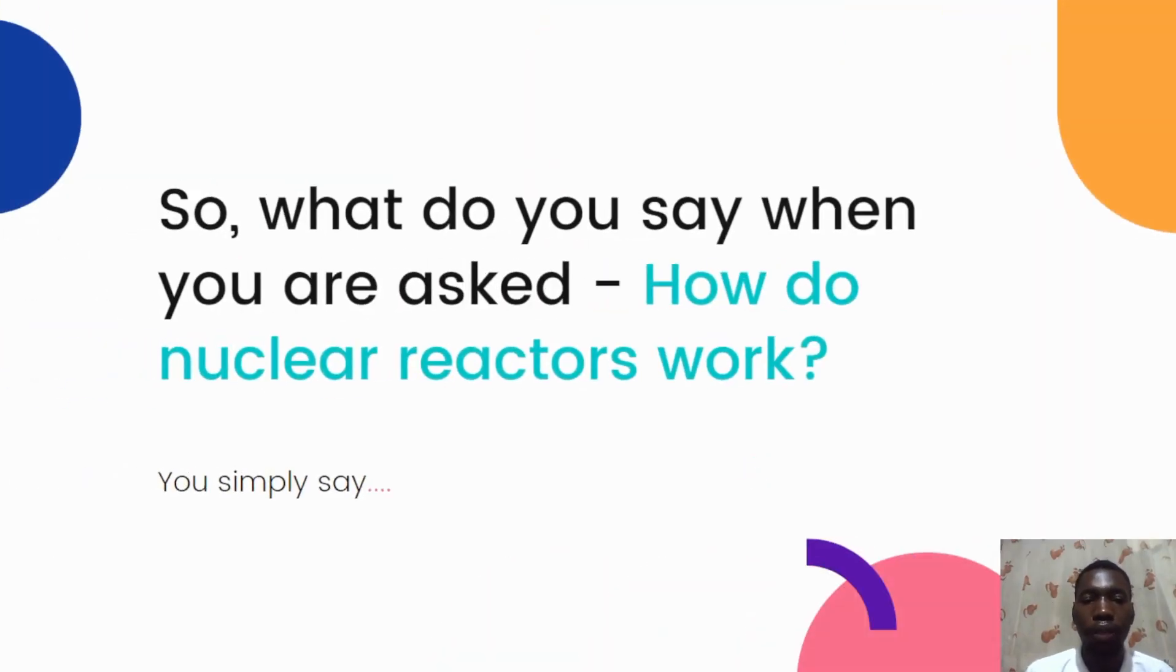So when next asked how do nuclear reactors work, you simply say: a nuclear reactor is a machine used to split atoms by bombarding uranium atoms with neutrons. The energy generated in this process produces heat, which will then produce steam that drives the turbine to create electricity. It is that simple. If they need further details, advise them to go to the YouTube search bar, find Energy Brief with Peter, subscribe, and watch their videos on how nuclear reactors work.